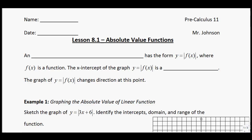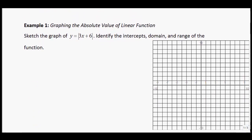An absolute value function has the form y equals the absolute value of f of x, where f of x is a function. The x-intercept of the graph y equals f of x is what we call a critical point. At this point, the graph is going to change direction. The graph of the absolute value is going to be something you've really never seen before — it's going to be related to a linear graph, but at that critical point, things are going to change.